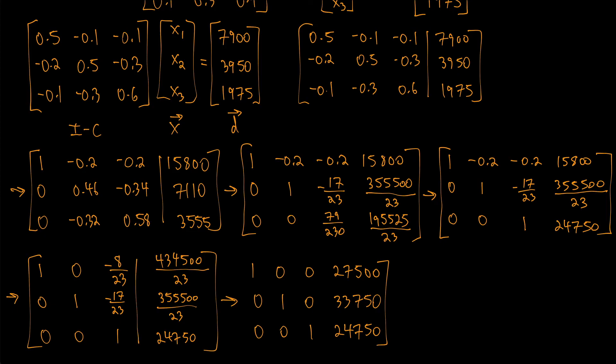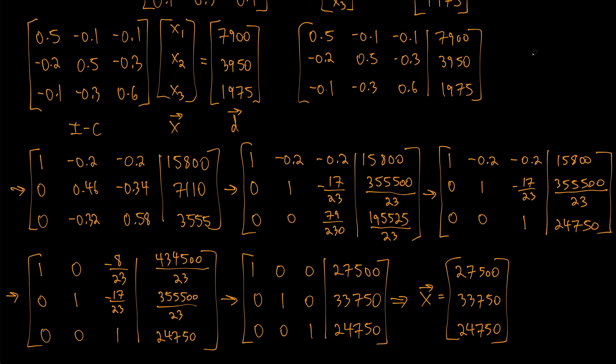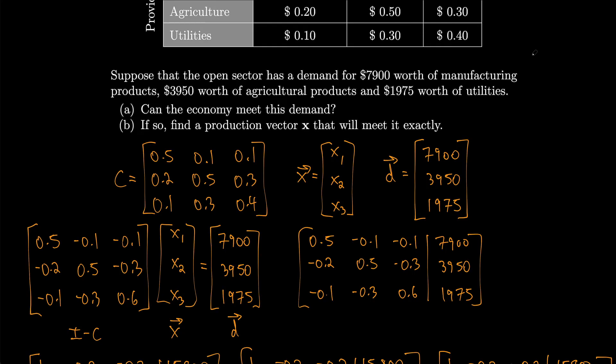So that means I get my x vector equal to 27,500, 33,750, 24,750. This means that this is what the production sector has to produce in order to meet both their own demand and the outside demand. Since we were actually able to reduce this matrix and find x, the answer, of course, is yes, the economy can meet this demand.